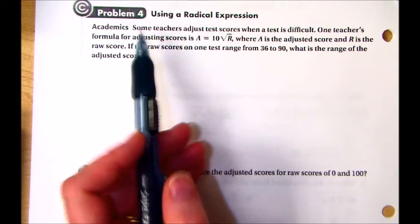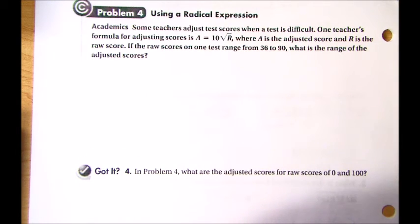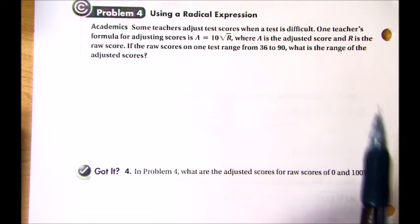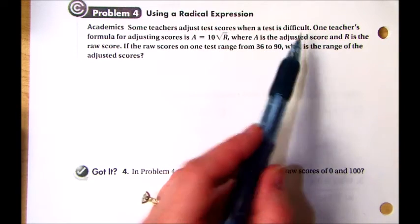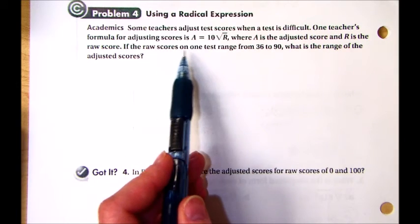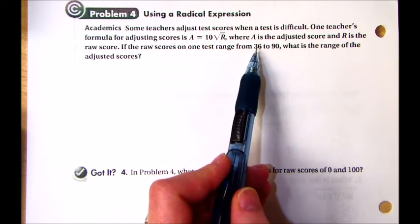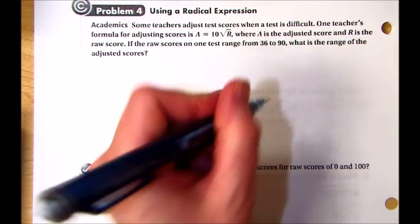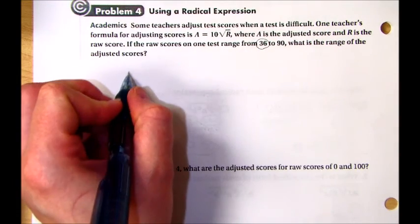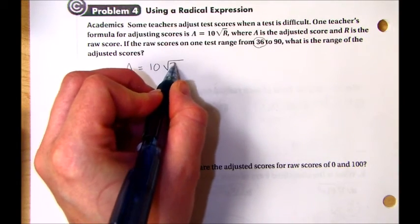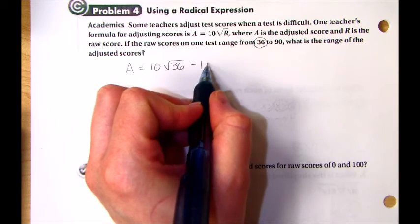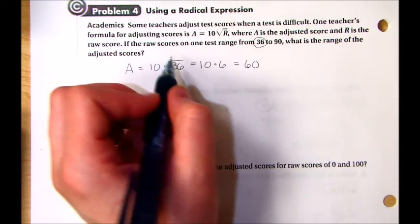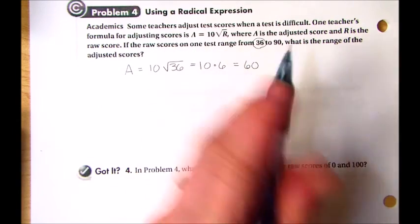Using a radical expression. Academics. Some teachers adjust test scores when a test is difficult. One teacher's formula for adjusting scores, kind of like a curve, is a equals 10 times the square root of r. a is the new adjusted score and r is the original or the raw score. The raw scores on one testing range from a 36, which would be like an F, to a 90, which is almost like an A. What is the range of the new adjusted scores? So what we're going to do is we're going to plug in 36 into our equation. So we'll do the adjusted score is 10 square root of plug in 36. So that's really just 10 times the square root of 36 is 6. So the new adjusted score is a 60. So now what does that mean? That means somebody who scored a 36 is now scoring a 60%.